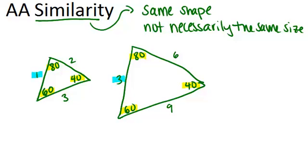one and three, three and nine, and two and six, you'll notice that in the bigger triangle the sides are always three times as big as their corresponding side in the smaller triangle.